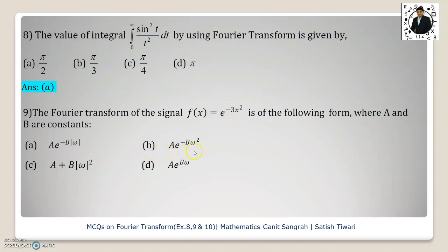If you observe here, option b is similar to e^(-3x²), where A is the constant multiplied to the function e^(-Bω²). One more similar question which is very famous: f(x) = e^(-x²/2) and its Fourier transform will be e^(-s²/2), or we can write ω in place of s.